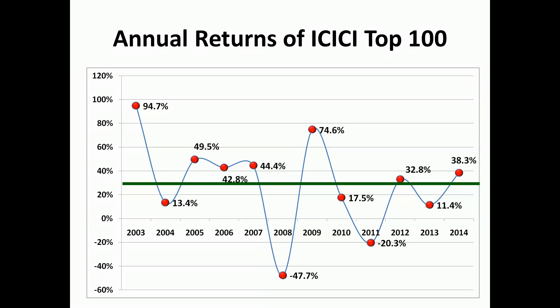The green line represents the arithmetic average. You may recall that the CAGR represents the so-called geometric average. The green line is just the arithmetic average — the usual average we are all used to: you add up all 12 returns and divide by 12. Notice that some returns are above this green line and some are below.